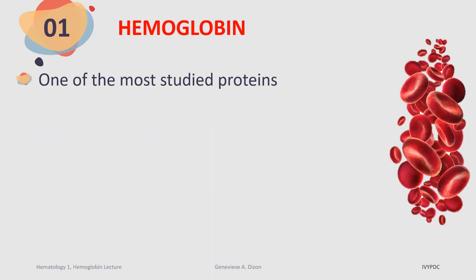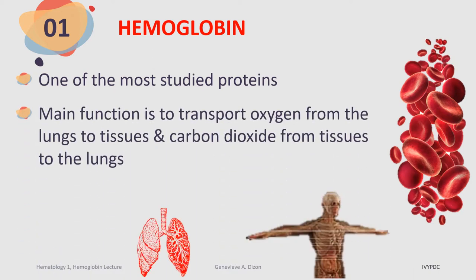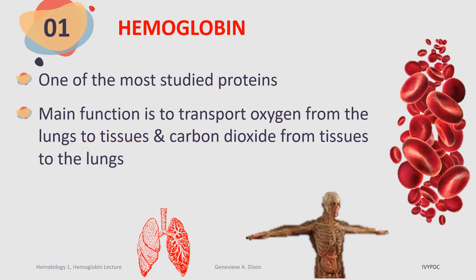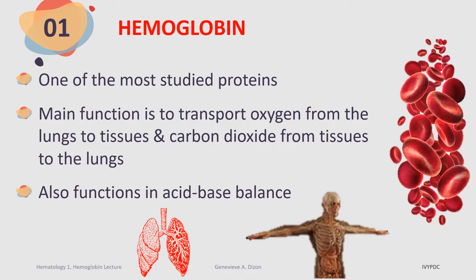So what is hemoglobin? Hemoglobin is one of the most studied proteins of the body, mainly because it is very easy for us to isolate it from the red blood cells. The main function of hemoglobin is to transport oxygen from the lungs to the tissues and to transport carbon dioxide from the tissues back to the lungs, picking up oxygen in the lungs and delivering it to the different peripheral tissues. This is very important because body tissues and organs require oxygen to function properly and to survive. Hemoglobin also contributes to acid-base balance by binding and releasing hydrogen ions, and it transports nitric oxide. All of this will be discussed.